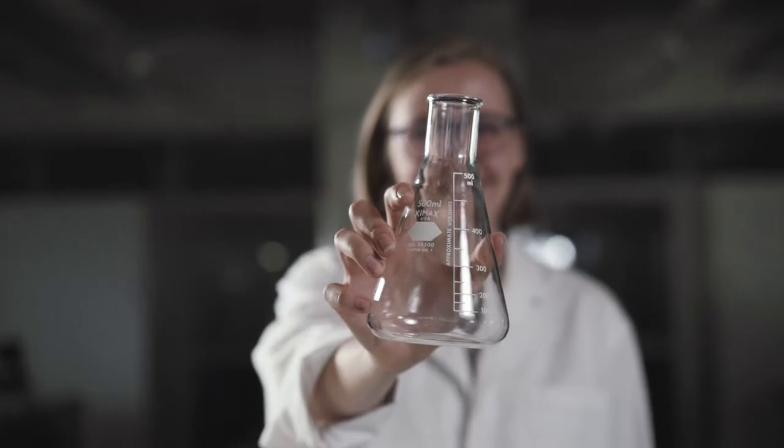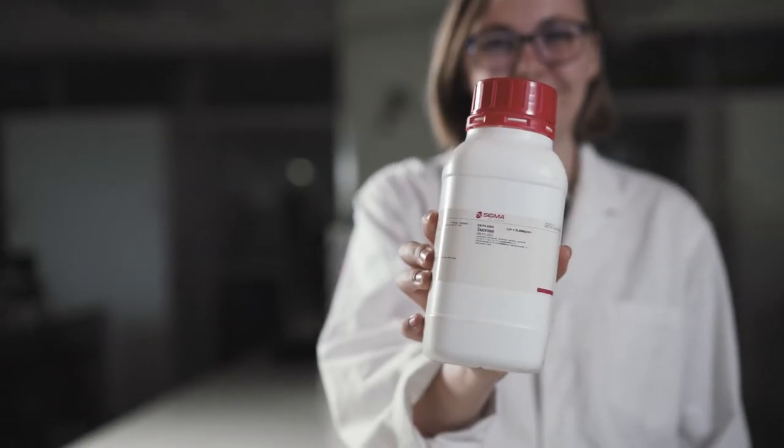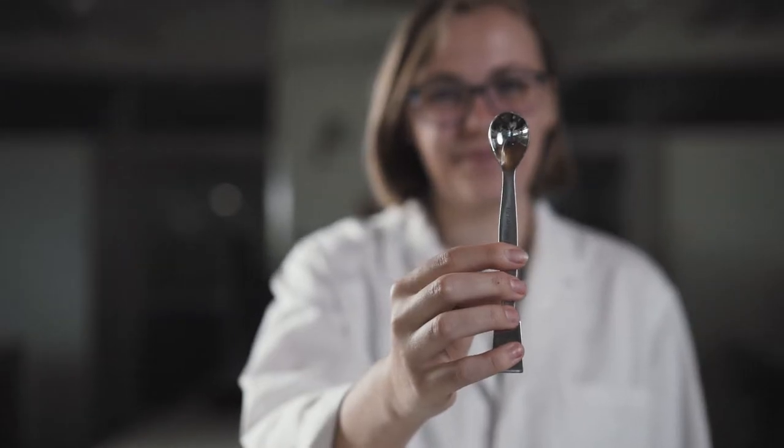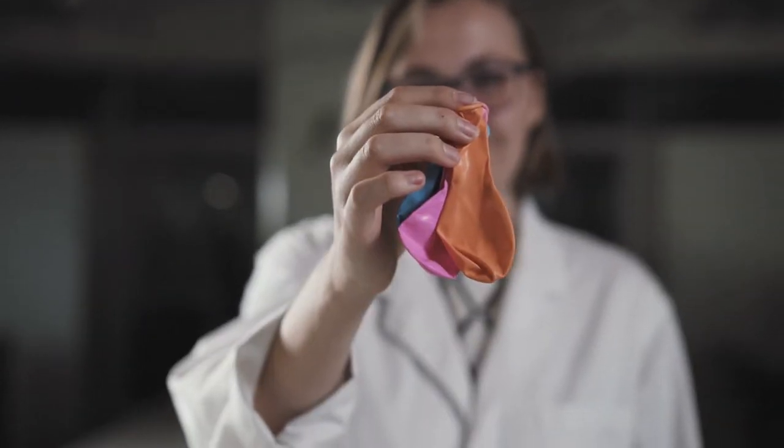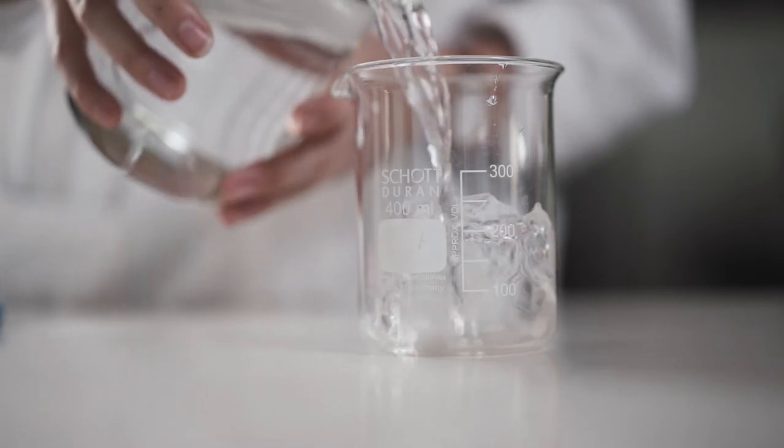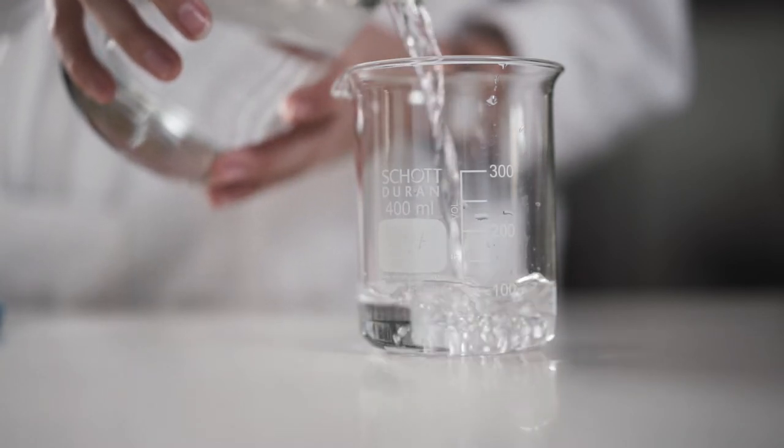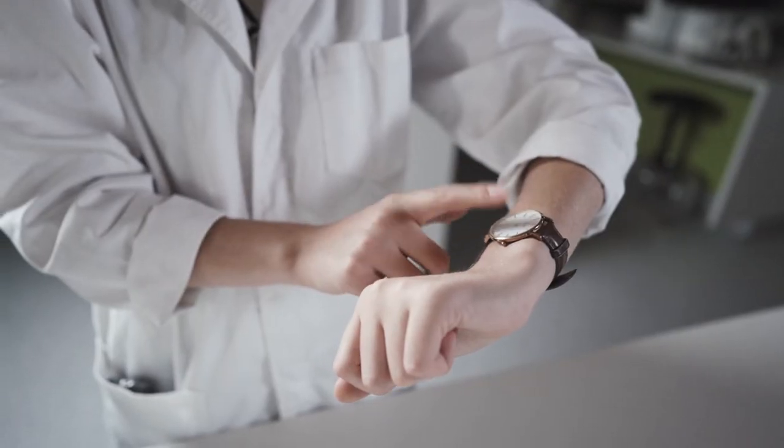For an example, in today's experiment with yeast, the independent variable, the one we're changing, will be the water temperature. The dependent variable is the one we're measuring so it's going to be the water displaced by the gas produced in the balloon. The controlled variables are going to include the amount of water we add, the amount of yeast we add, the amount of sugar we add and the time that we let the balloons blow up.